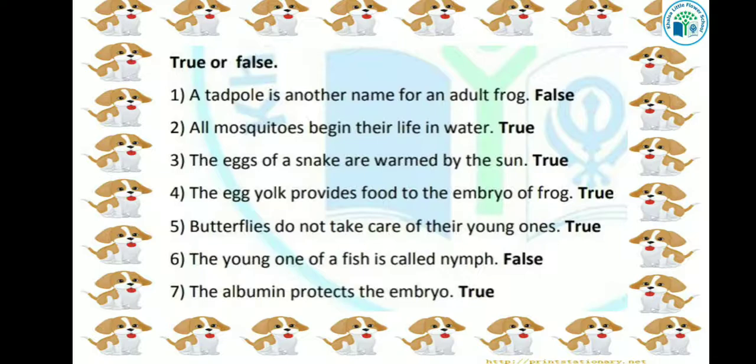The next is: the young one of a fish is called nymph. जो fish के छोटे बच्चे होते हैं, उन्हें nymph कहा जाता है — तो ये sentence false है. क्योंकि cockroach के बच्चे, जो egg में से बाहर आते हैं, उन्हें ही nymph कहा जाता है. The next question is: the albumin protects the embryo. जो albumin होता है egg के अंदर, वो ही embryo को protect करता है. तो ये sentence true है.